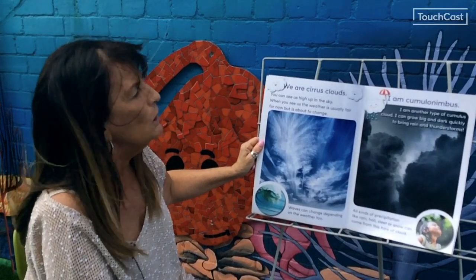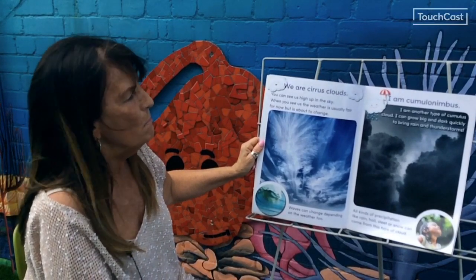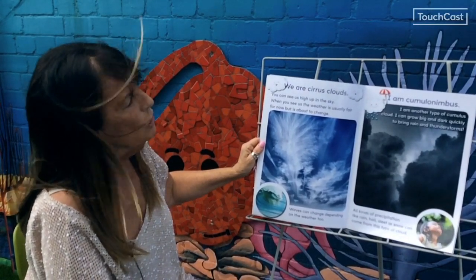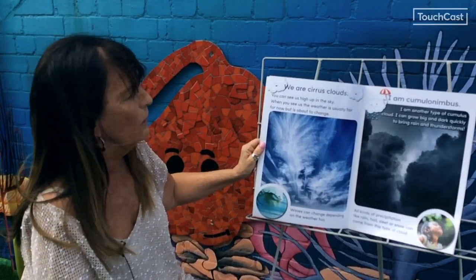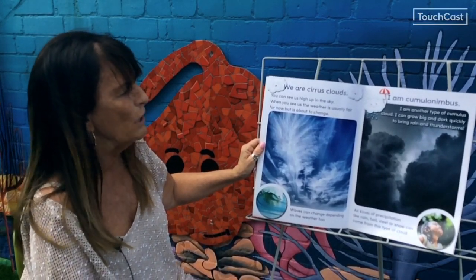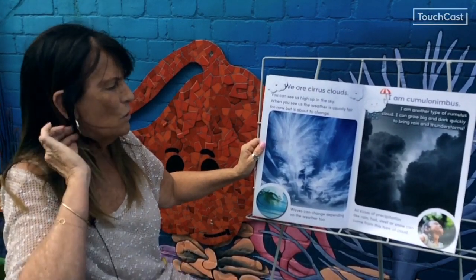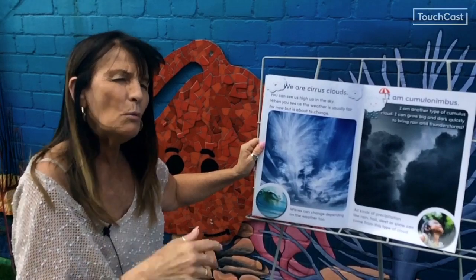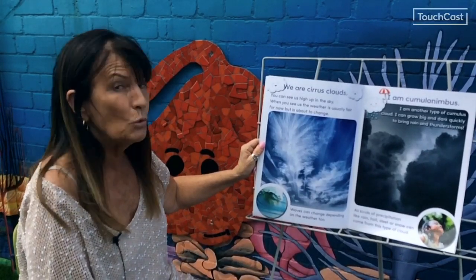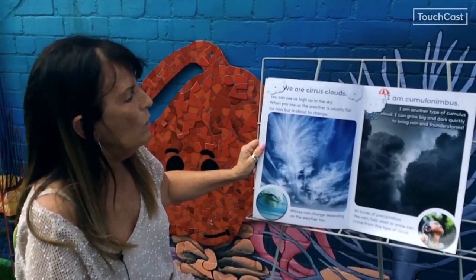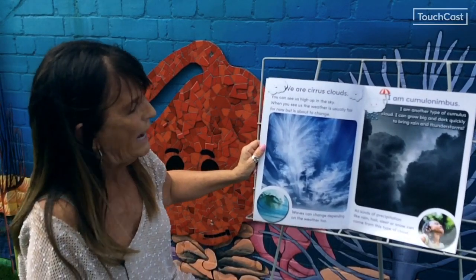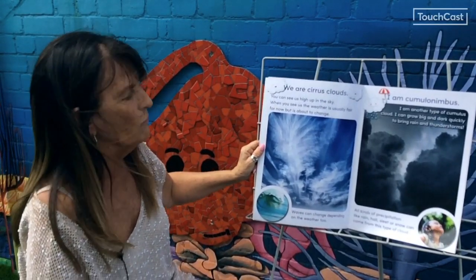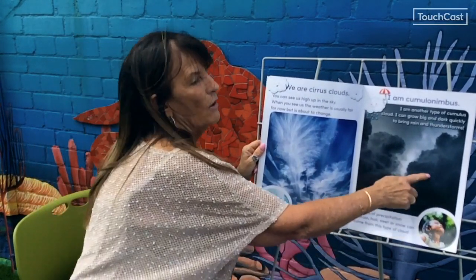I'm a cumulonimbus cloud — another type of cumulus cloud. I can grow big and dark quickly to bring rain and thunderstorms. What would you wear in a thunderstorm? Would you go out in a thunderstorm? All kinds of precipitation like rain, hail, sleet or snow can come from this type of cloud.